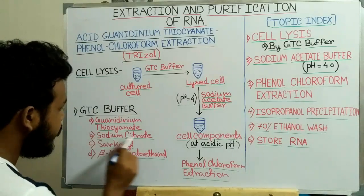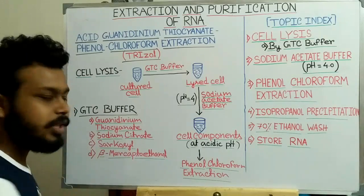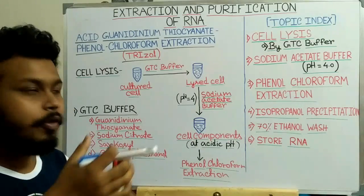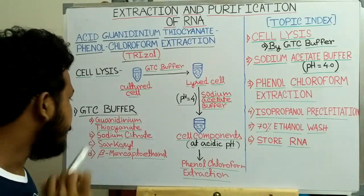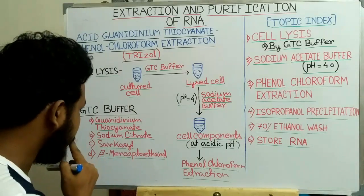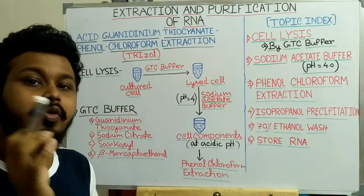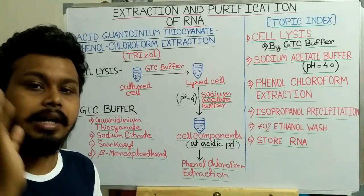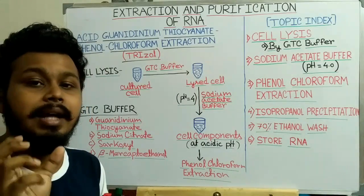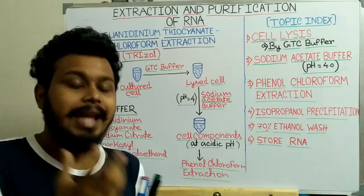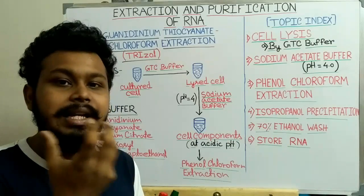The GTC buffer contains four components: guanidinium thiocyanate, sodium citrate, sarcosine, and beta-mercaptoethanol. Guanidinium thiocyanate is the most important component for RNA extraction. It has two functions: it causes cell lysis, and it inhibits RNase activity so that RNase cannot cleave the RNA molecules, allowing us to obtain intact native RNA molecules.